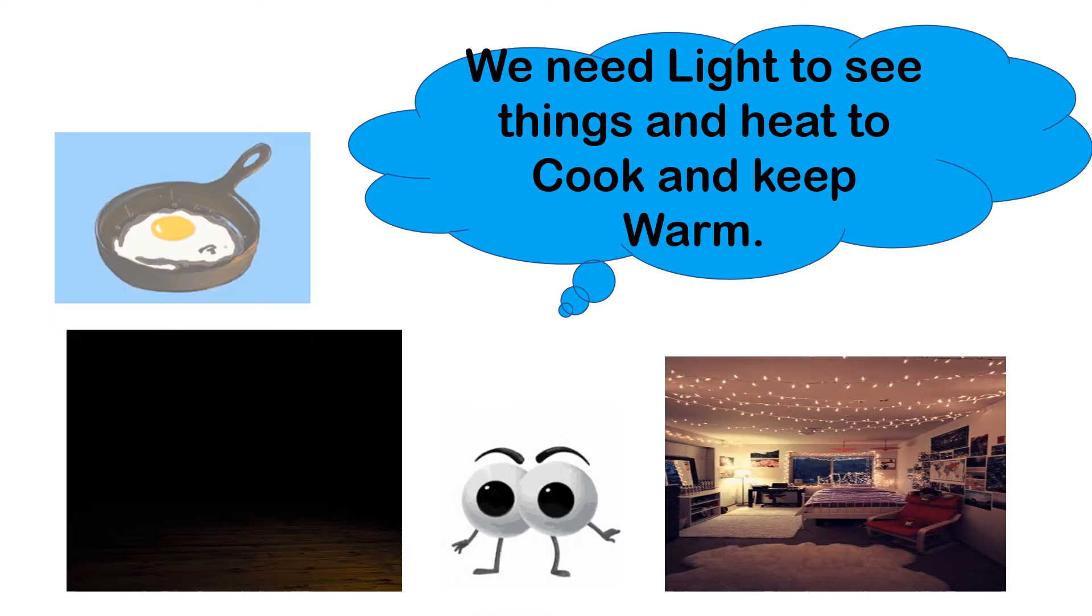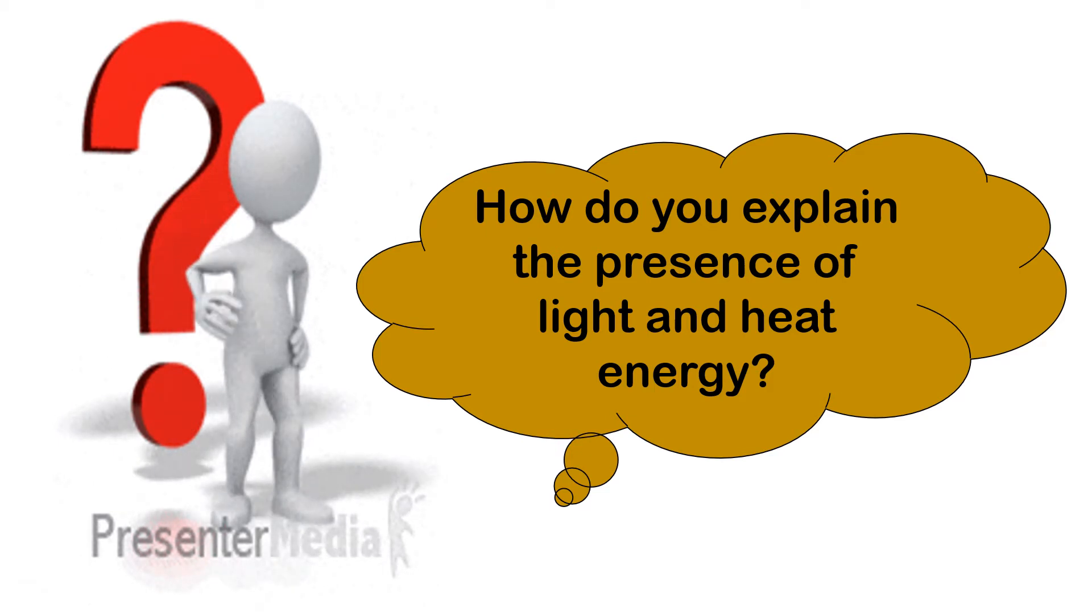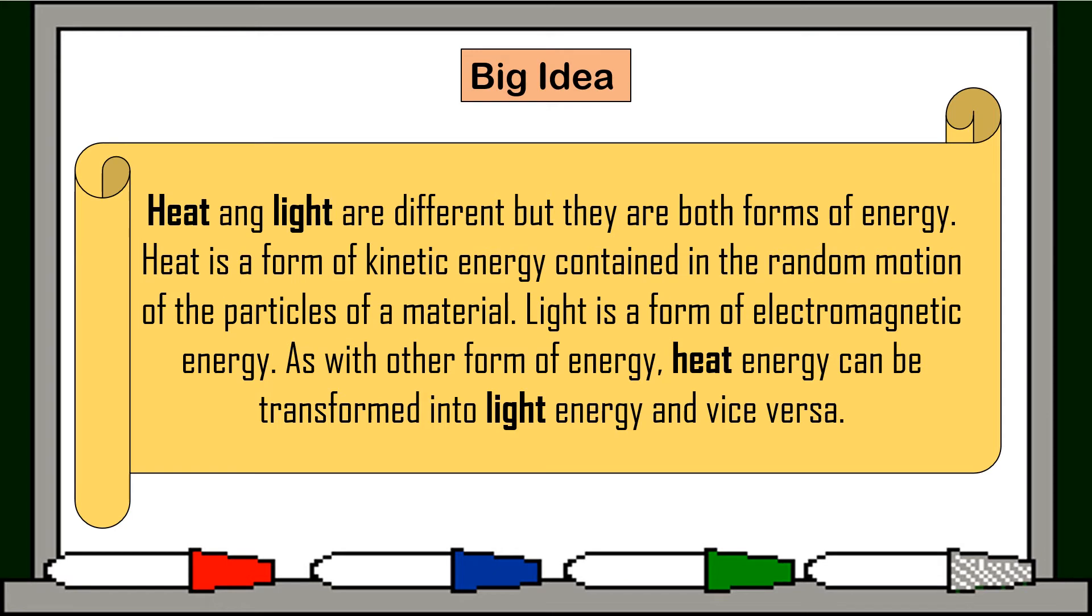So we use heat to cook food and keep warm. Now kids, how do you explain the presence of light and heat energy? Energy is around us. It can be in the form of heat and light. For big idea, heat and light are different, but they are both forms of energy. Heat is a form of kinetic energy contained in the random motion of the particles of a material. Light is a form of electromagnetic energy. Heat energy can be transformed into light energy and vice versa.